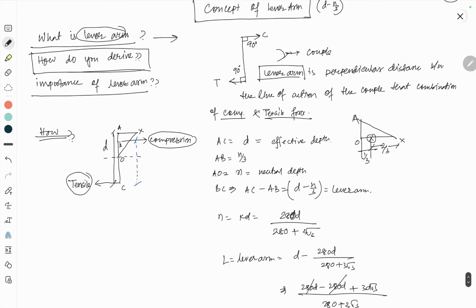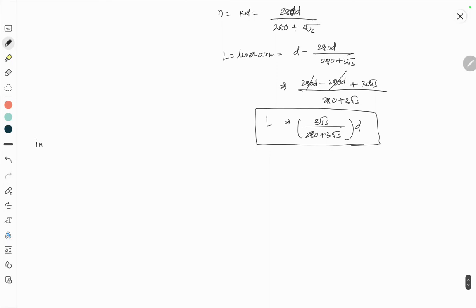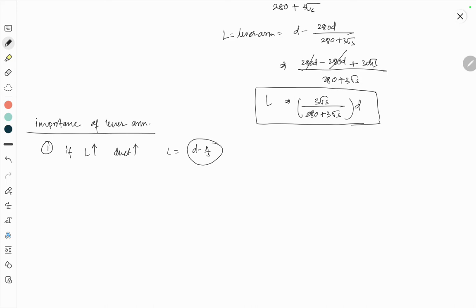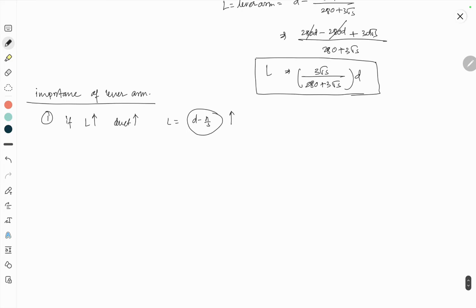So now we talk about the importance of lever arm. The importance of lever arm: if lever arm distance L is increasing, then the material is more ductile. That means L equals D minus N by 3. So if this is increasing, then ductility increases. N is some function of D, so L equals function of D. So basically, effective depth is increasing, or you can say overall depth increasing, then ductility increases.